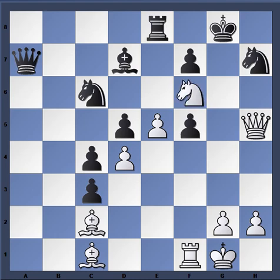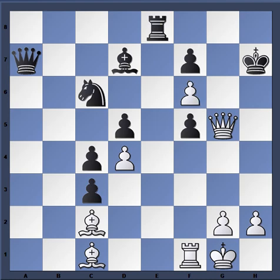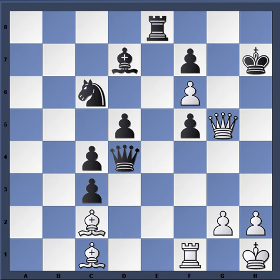White continues with the attack. Qg5+ — a good in-between move — Kh7, exf6, now mate is threatened. Qxd4+ is a little too late; Kh1 and White has a decisive position. You can see there's no stopping mate without losing large amounts of material.